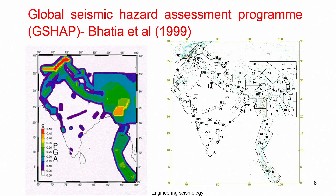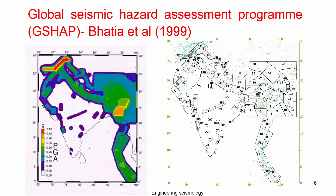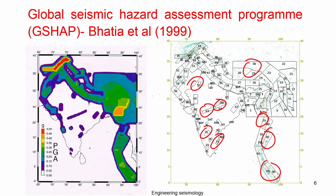Eighty-six potential seismic source zones can be seen on the map. They considered the entire India plus Bangladesh, Nepal, and even a part of Pakistan clubbed together. This is the source zone they considered.